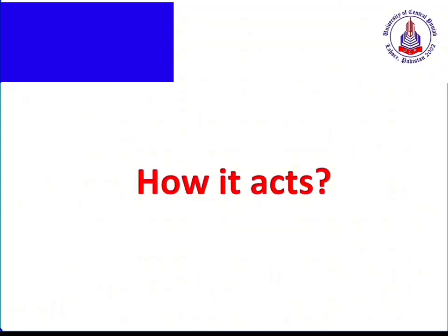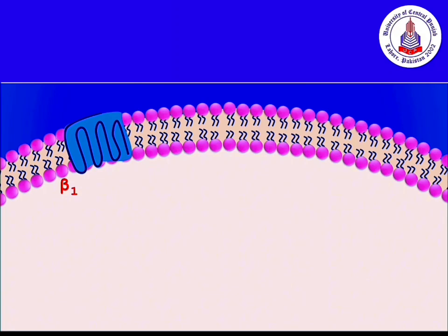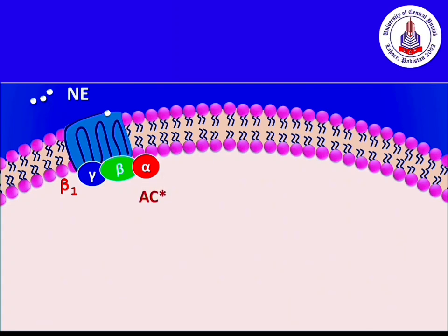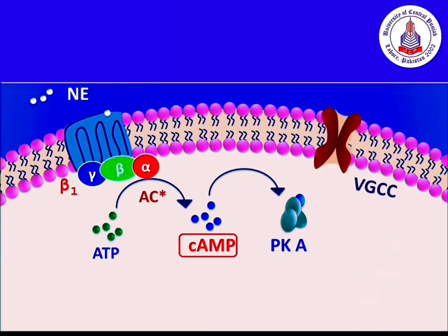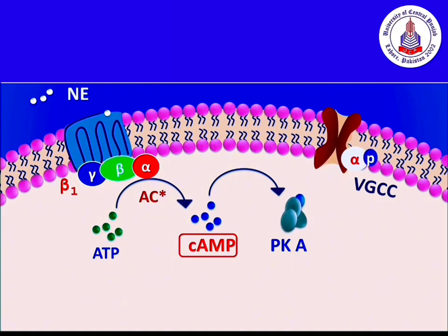Now let us see how this drug acts on the heart. Beta-1 receptors are present on the heart. When norepinephrine binds to these beta-1 receptors, they are activated, resulting in stimulation of the adenylyl cyclase system. Adenylyl cyclase converts ATP into the secondary messenger cyclic AMP. This cyclic AMP activates protein kinase A, which can then target voltage-gated calcium channels located on the heart. Protein kinase A interacts with the alpha subunit of voltage-gated calcium channels, resulting in phosphorylation and opening of the ion channel.